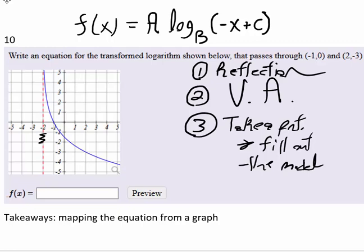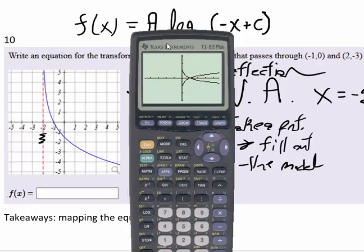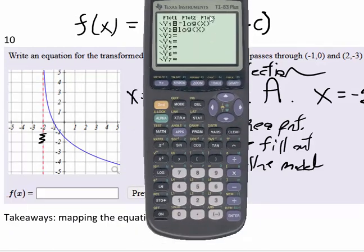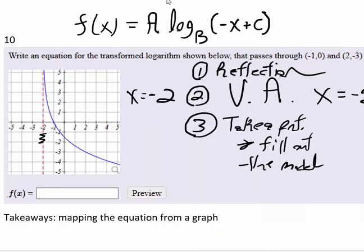Well what's that vertical asymptote going to be? My vertical asymptote, I should have said vertical asymptote, for this model is at x equals negative 2. So I need to, let's take a look at the calculator here, I need to shift this two units to the left.